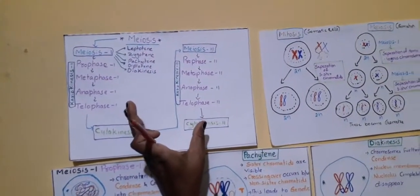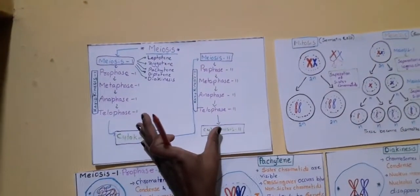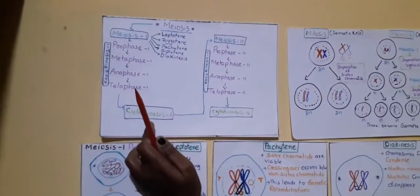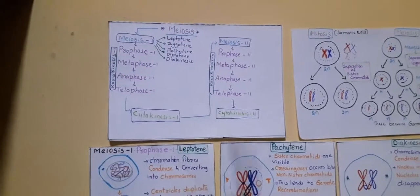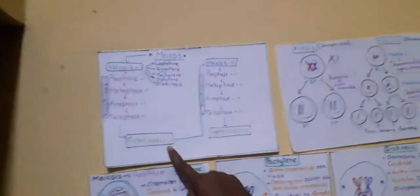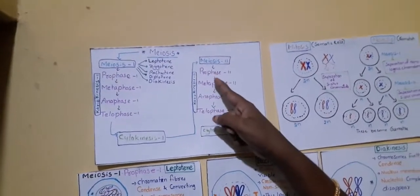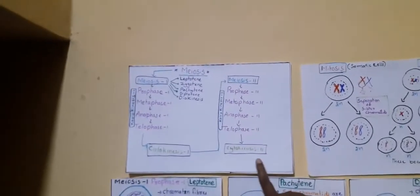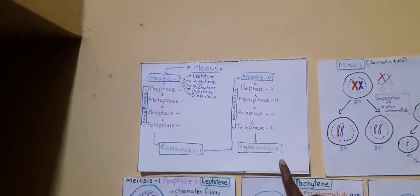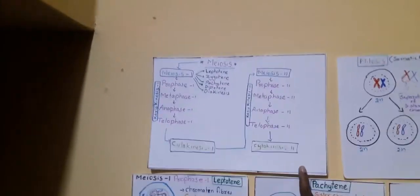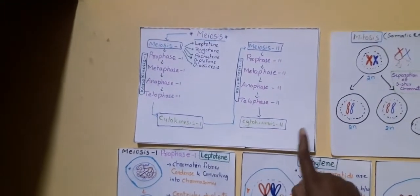After division of the nucleus, division of cytoplasm takes place — called cytokinesis. After Cytokinesis I is finished, the cell immediately enters Meiosis II. In Meiosis II also, phases are the same: Prophase, Metaphase, Anaphase, and Telophase — that is Karyokinesis II — followed by Cytokinesis II. Finally, four haploid daughter cells are formed.